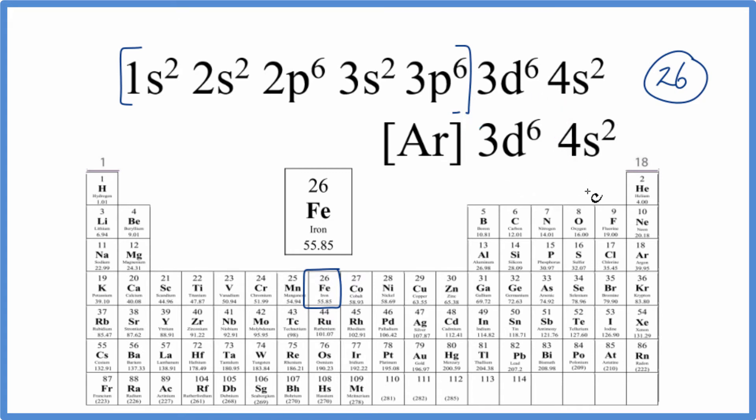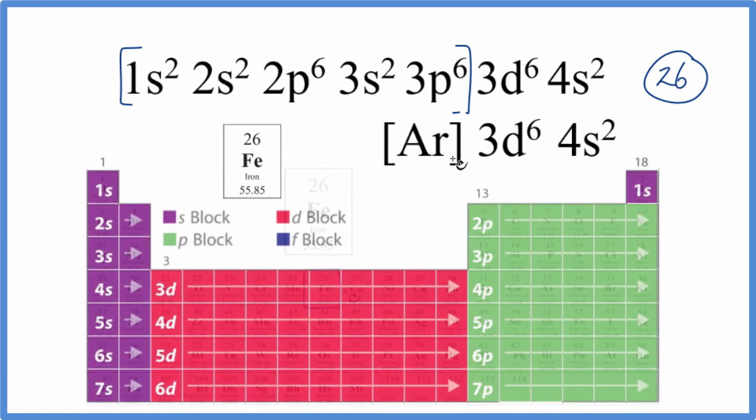There's another way we could figure out what element is represented by this electron configuration. We could use the periodic table broken up into blocks. So we're looking for the electron configuration here that ends in 3d⁶, 4s². These are the valence electrons here for iron.